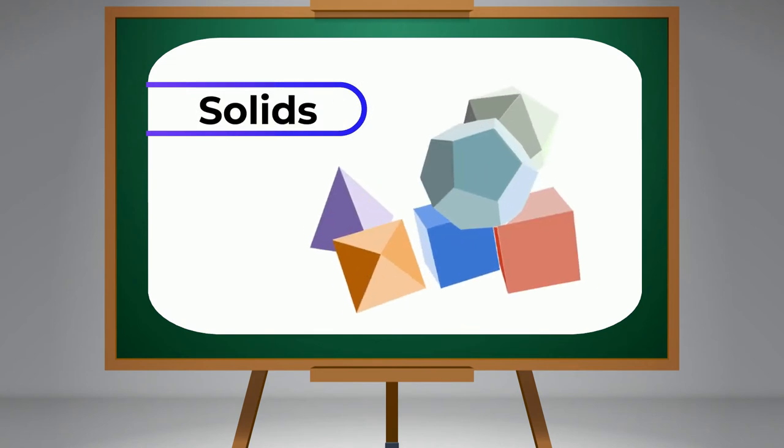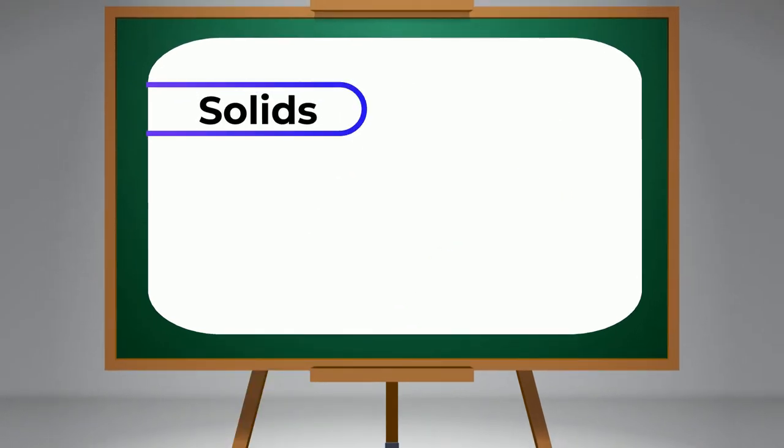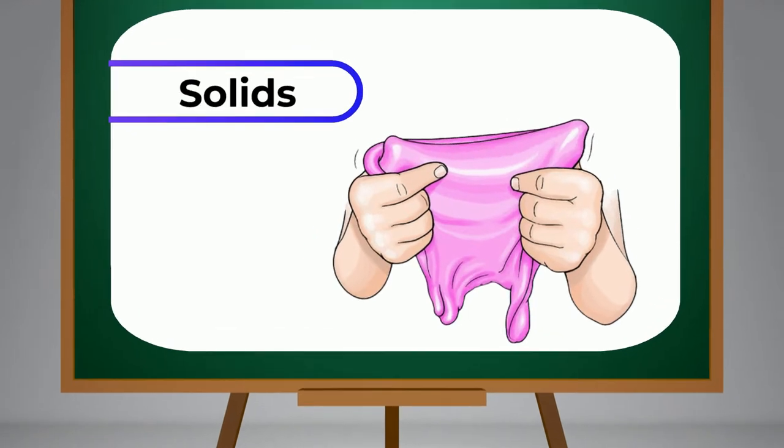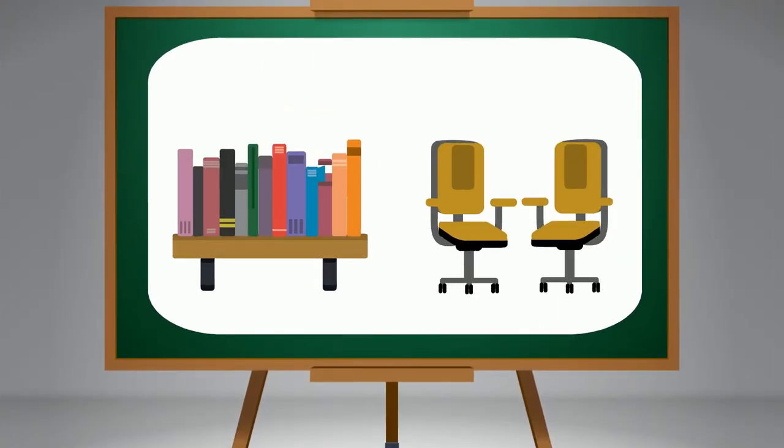An object which has a fixed shape is called a solid. It keeps its solid form no matter where it is put. Look around you, you will see many solids like your books.